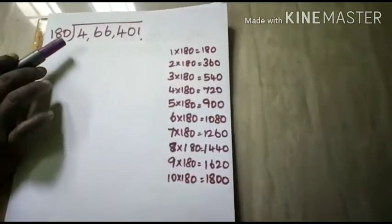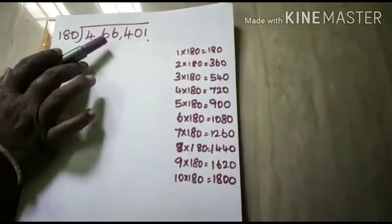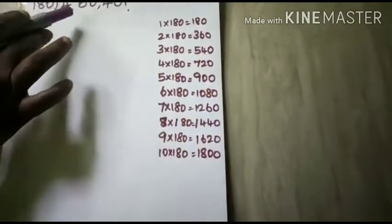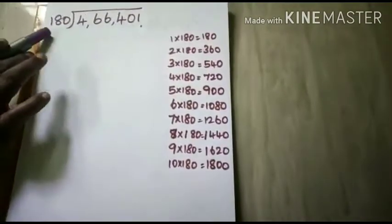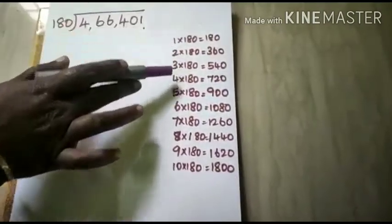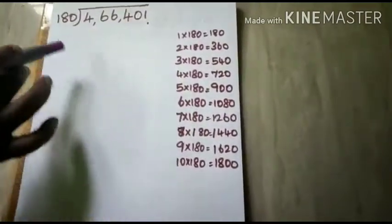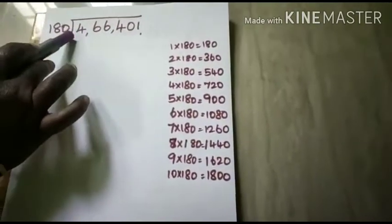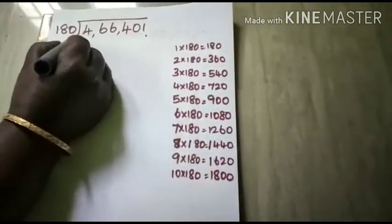Here your dividend is 466,401 and your divisor is 180. So here you are going to divide this number by 180. You can write the tables here. Since it is a three digit number we can directly take three numbers.